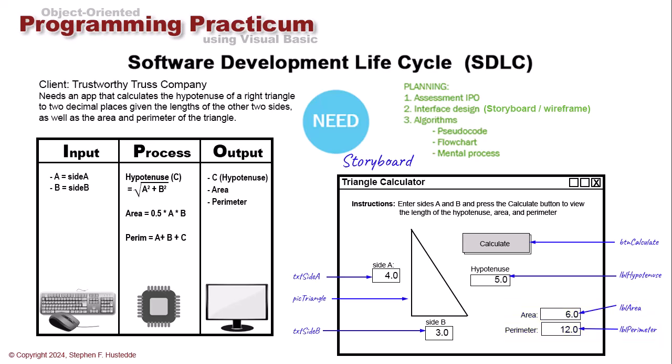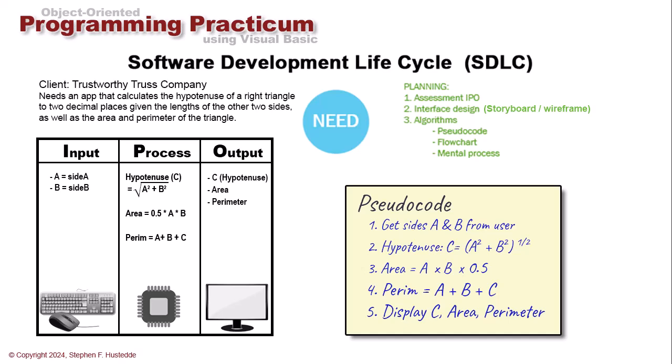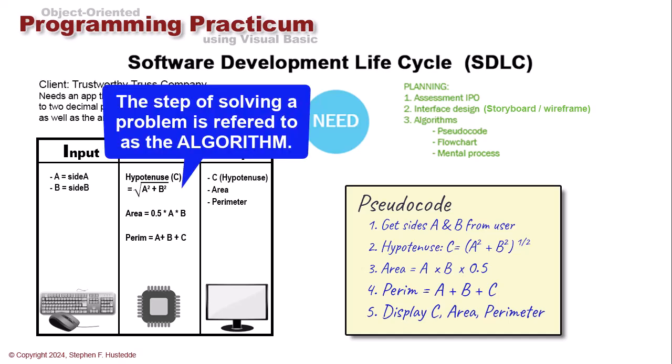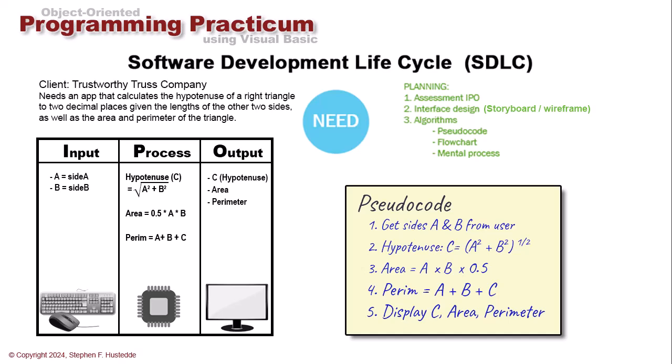So that's our storyboard or wireframe — what this is going to look like. We need to determine the steps of going from the input to the output, the process we have to go through. One of the tools we can use to identify those steps is called pseudocode — simply writing our steps sequentially in English syntax. My pseudocode is: get sides A and B from the user; calculate the hypotenuse as C equals the square root of A squared plus B squared; area equals A times B times 0.5; perimeter equals A plus B plus C; and display the length of side C, the area, and the perimeter.